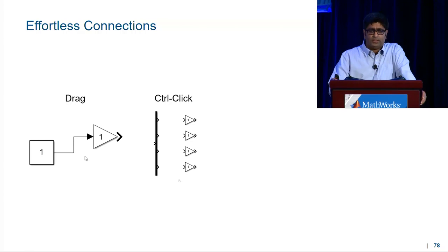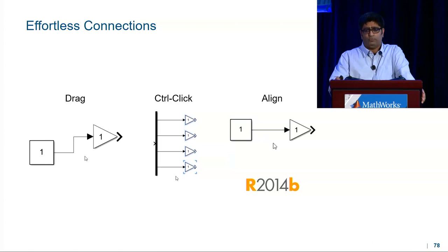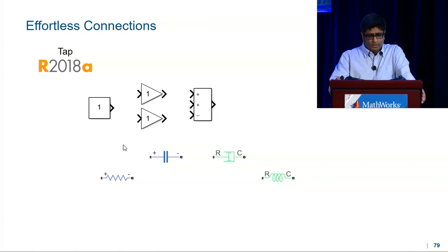I can use Control-Click to connect multiple blocks, and I think of this as Google's I'm feeling lucky button. You'll get what you want if you know what you're doing. Since 14B, we added smart guides, so when you align two blocks, you will see a cue come up, and you can click on it to make a connection. But we ask ourselves, can we do better? In 18A, we added what I call tap to connect.